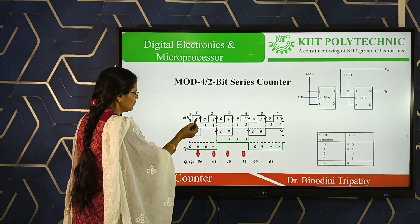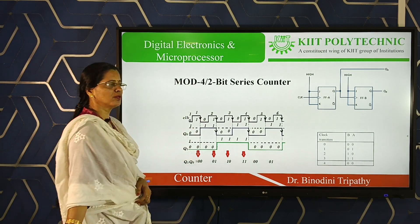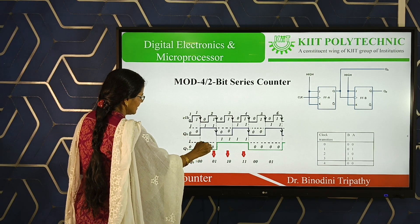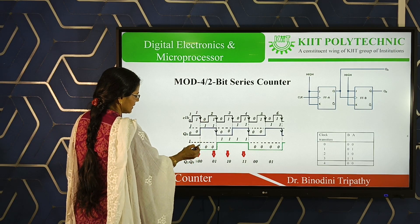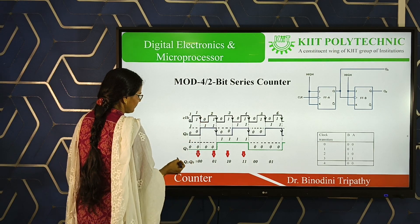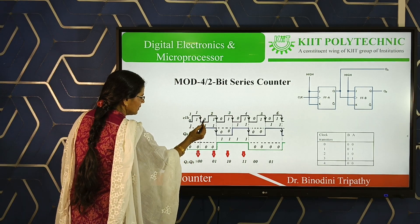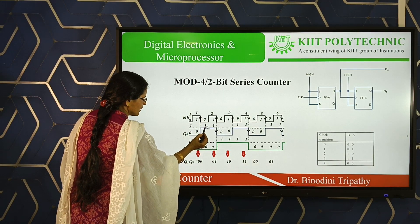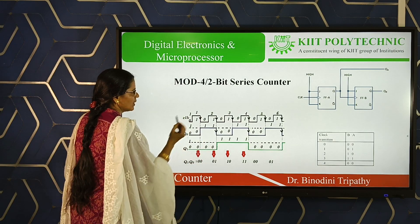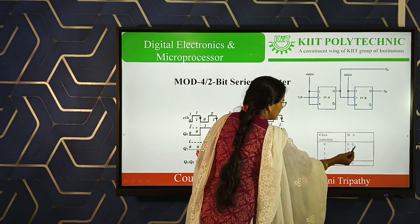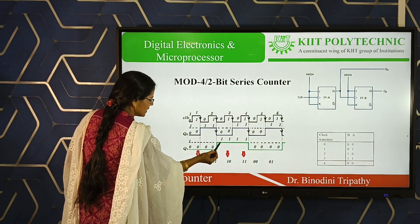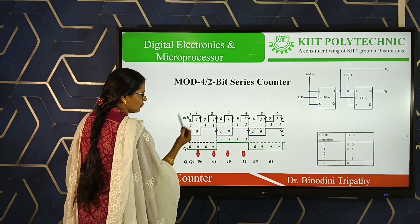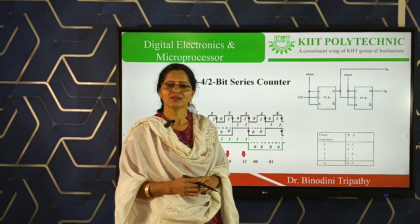For example: after the first clock pulse, now check — output B is at 0 and output A is at 1, so the reading is 0, 1. After the second clock pulse, your second flip-flop output is at 1 and the first flip-flop output is at 0, so the contents are 1, 0. In this way, the truth table is directly displayed in terms of the timing diagram.